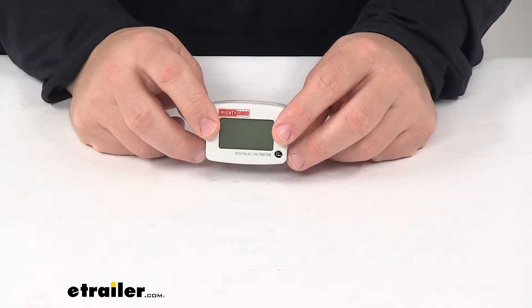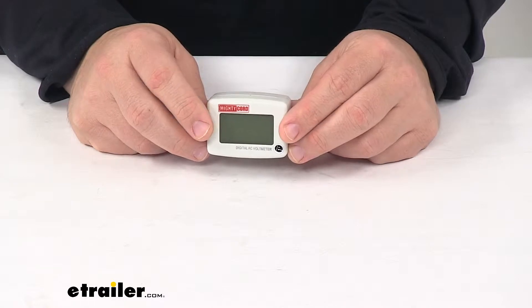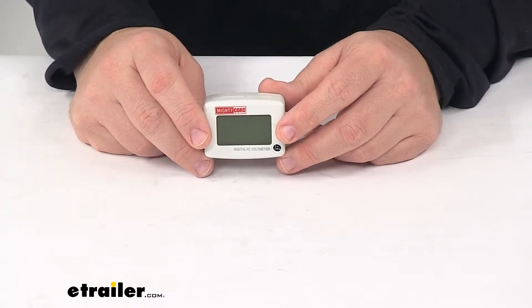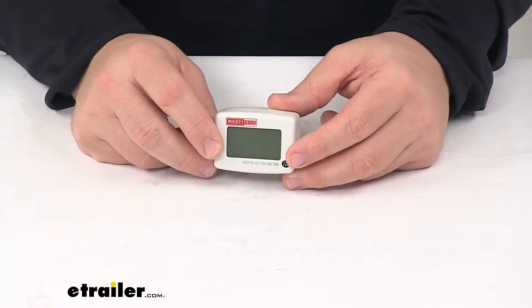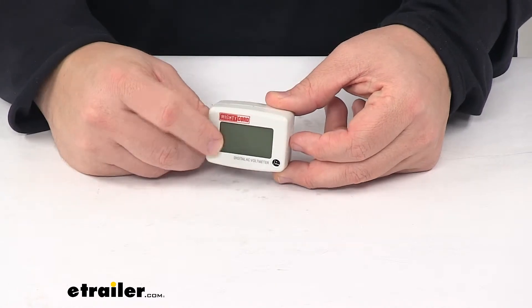Today we're taking a look at the MightyCord AC voltmeter. This voltmeter monitors the power coming into your RV and offers a nice large digital display.